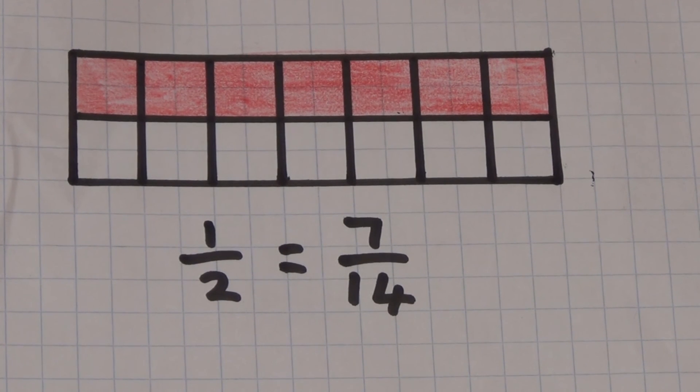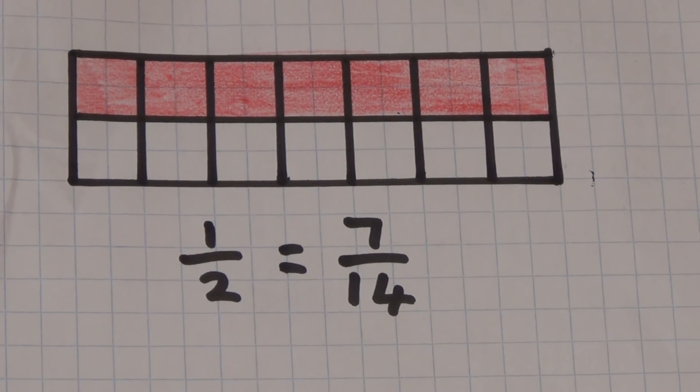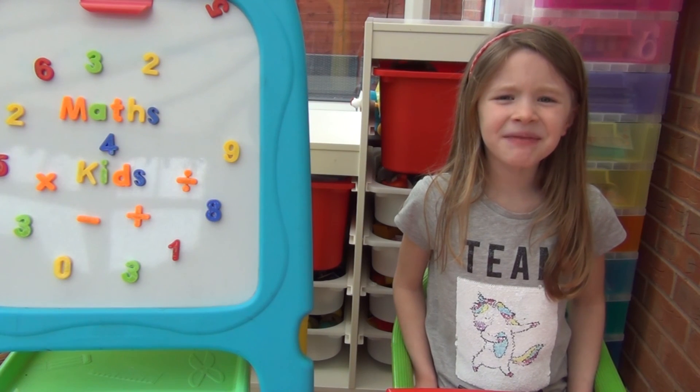One half is equivalent to seven-fourteenths. I have coloured in half of the rectangle which is seven out of the fourteen squares. Seven is also half of fourteen. I hope you found that useful.